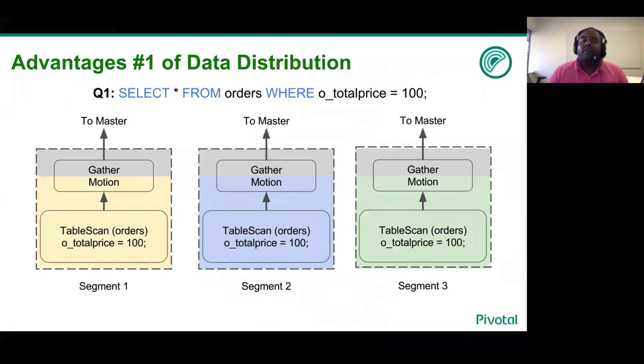What is the first advantage of data distribution? Let us look at a simple query select star from orders where total price equal to 100. Let us assume that the table is randomly distributed. Even as such in a random distribution policy, the table is distributed across three segments. And each segment has a portion of the orders table. And they can in parallel read the orders tuples and filter out only those tuples that meet the condition of total price equal to 100.